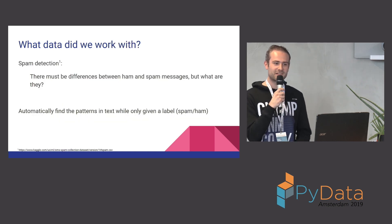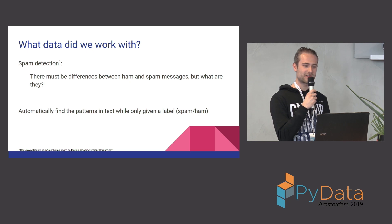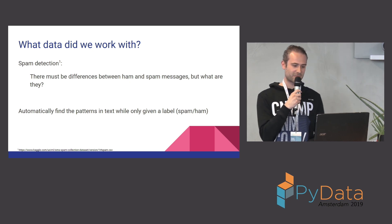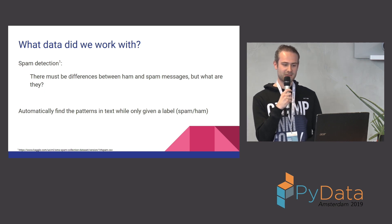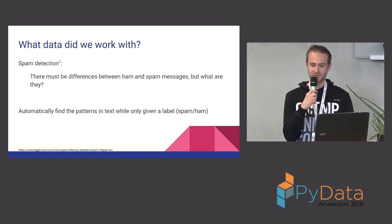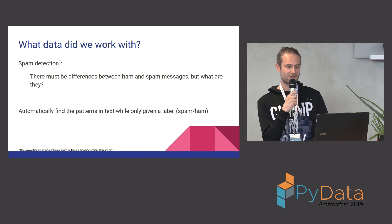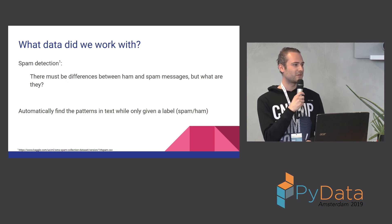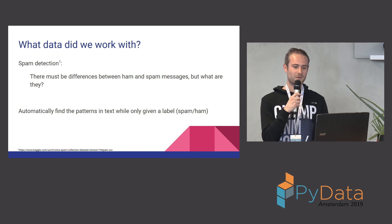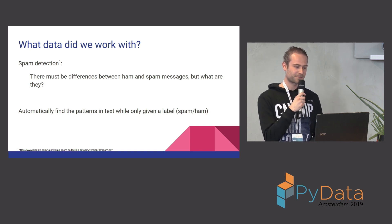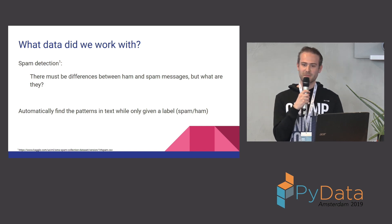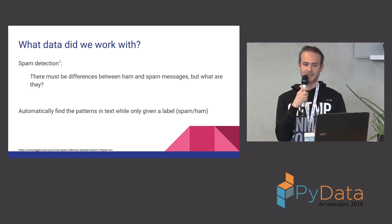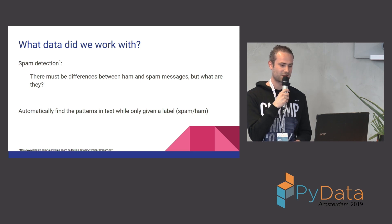So what was this actually an example of? This was an example of spam detection. We took a public dataset from Kaggle for SMS messages, which have both legitimate and spam messages. We assume that there is a difference between these messages, but we don't know what this difference is. So we want the algorithm to automatically find patterns that help predict whether something is a spam or ham message.